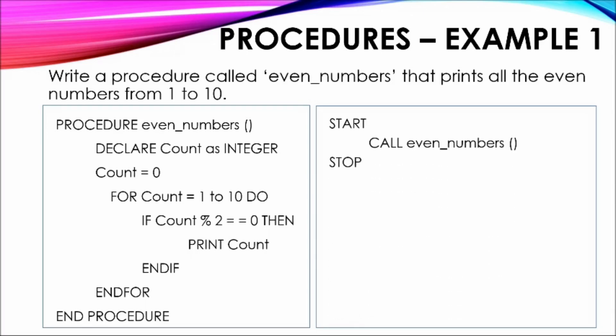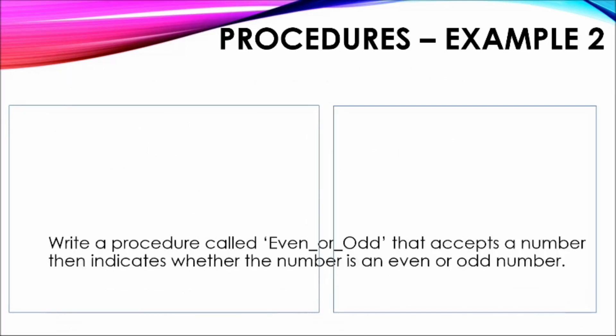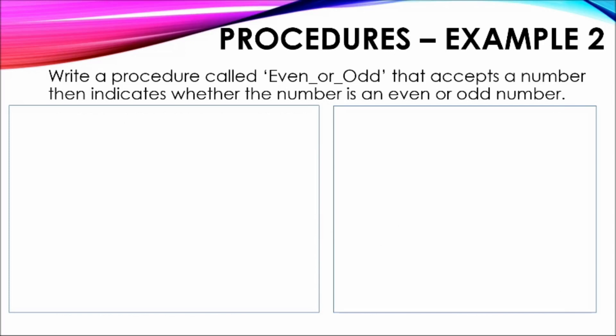Once the procedure has been defined, it is time to generate the main program. The main program will only contain the code required to launch the procedure. Once the procedure is called, the instructions within the definition of the module will be carried out. The pseudocode then ends with the keyword STOP.